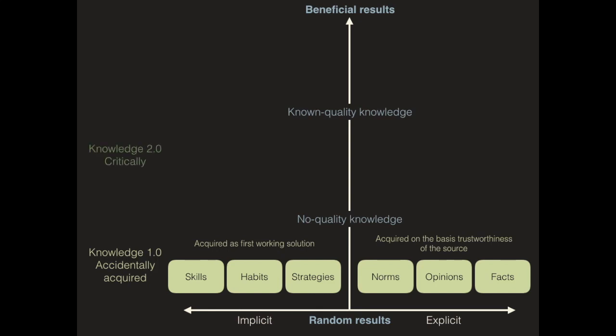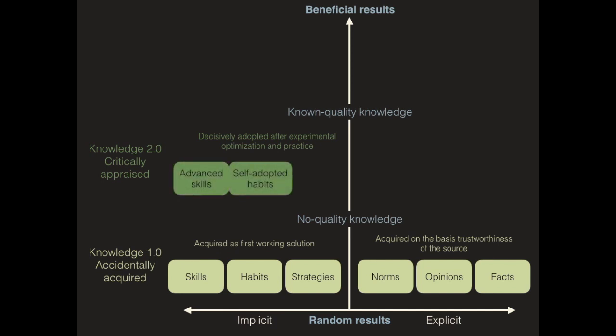This can be contrasted to knowledge 2.0 that is critically appraised before it is accepted to improve existing knowledge. On the implicit knowledge side we are now talking about knowledge that is decisively adopted after for example experimental optimization and targeted practice. Advanced skills, self-adopted habits, and carefully selected strategies are typical examples.